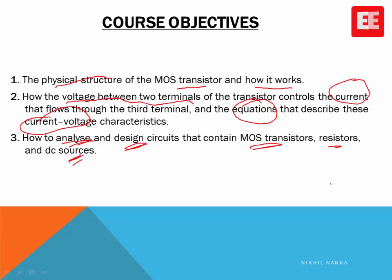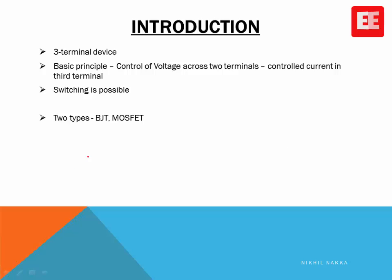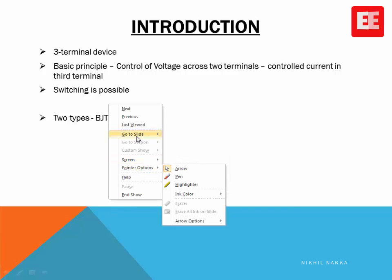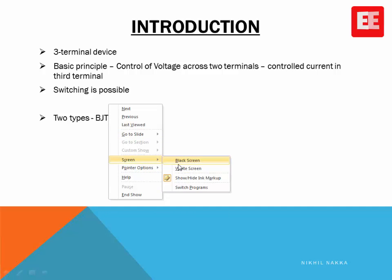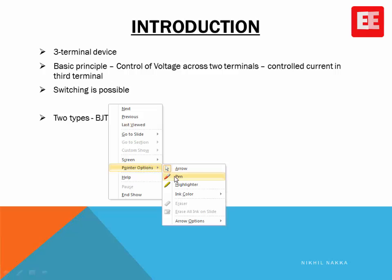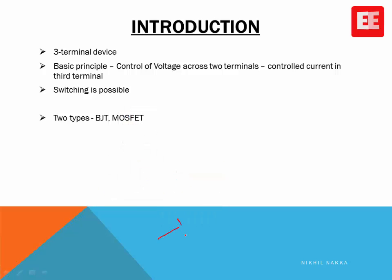So far we were very much familiar with two-terminal devices in semiconductors. The example of a two-terminal device is the junction diode. The property of the diode is that it is a unilateral device — it allows current in only one direction, the forward direction, and does not allow current in the reverse direction. So it is basically like a switch.